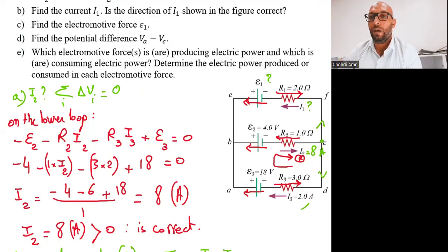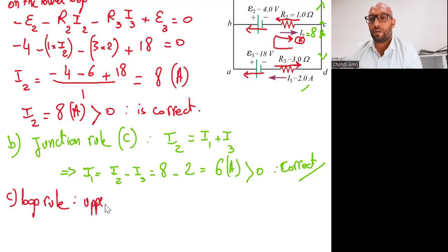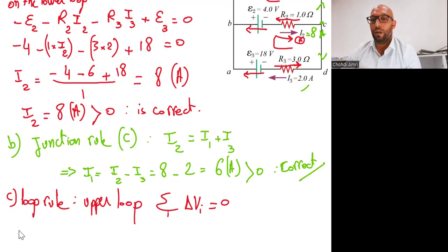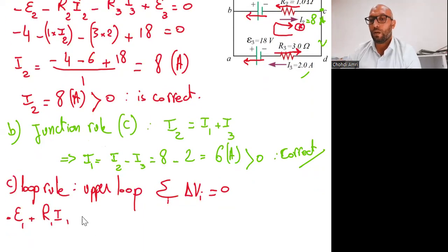Now let's move to Question C: find the electromotive force epsilon 1. Since epsilon 1 is on the upper loop, we'll use the loop rule on the upper loop. The sum of the potential differences across all elements equals zero. Assigning the clockwise direction as positive, epsilon 1 is opposite to the positive direction, so we write: minus epsilon 1 plus R1·I1 plus R2·I2 plus epsilon 2 equals zero.